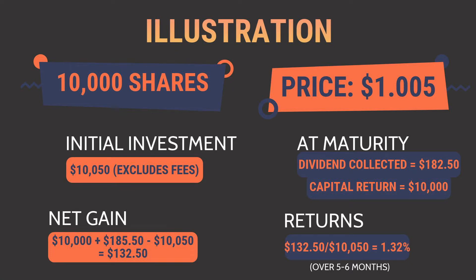At maturity, you will collect a dividend of $182.50. This is because all retail bonds pay dividends twice a year — at 3.65%, one year would yield $365 for 10,000 shares, but with only six months remaining, you get half: $182.50. The capital returned to you will be based on the one dollar issue price, which is $10,000. So you suffer a capital loss since you bought at a premium, but you still collect the dividend and make a net gain of $132.50.